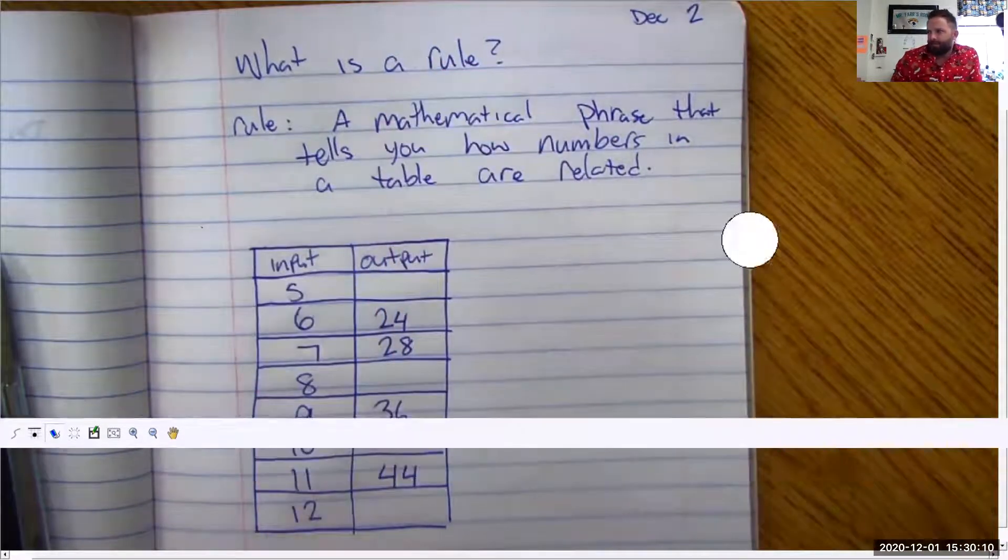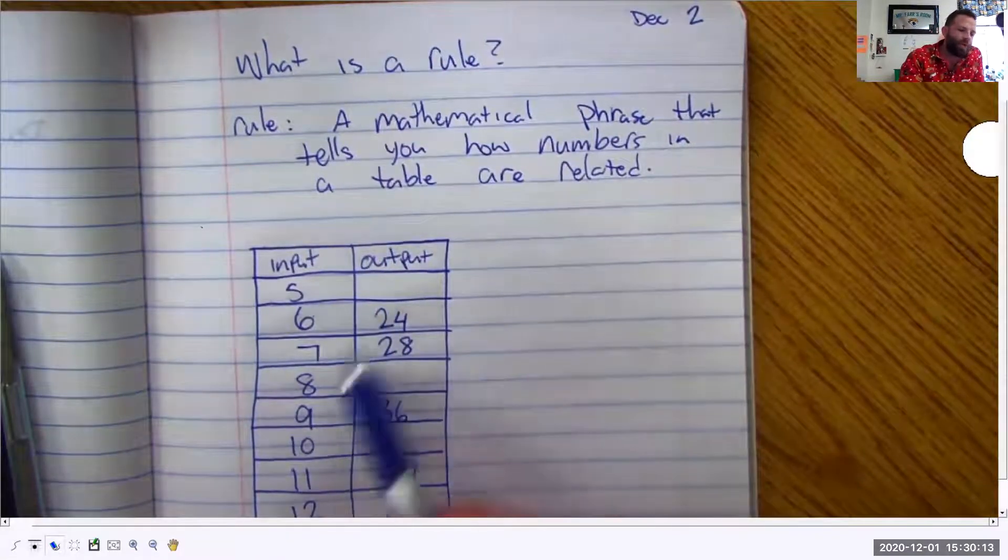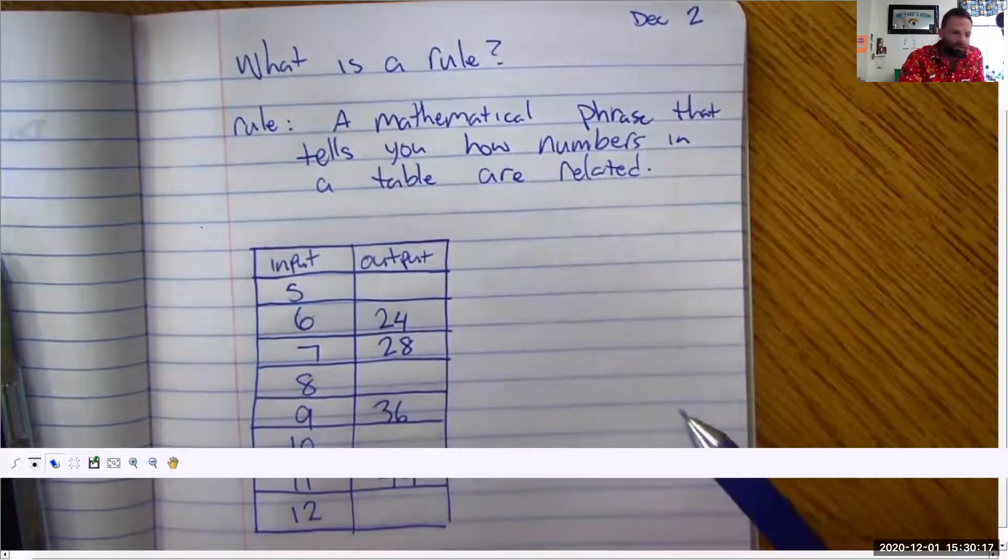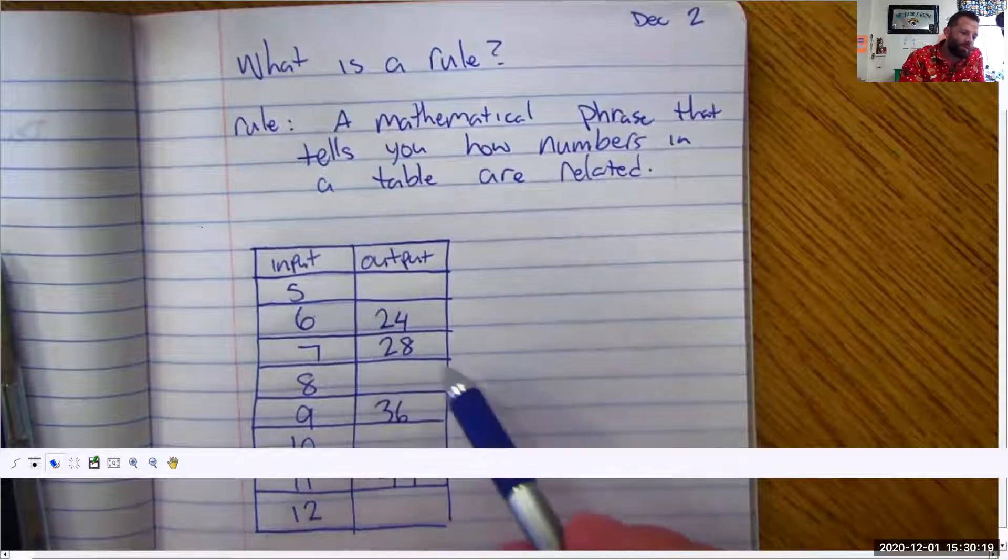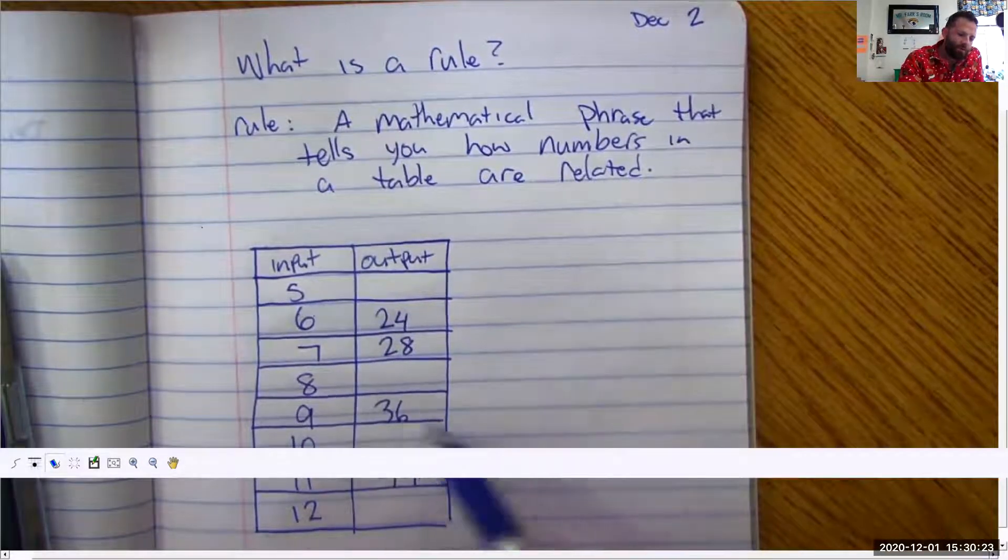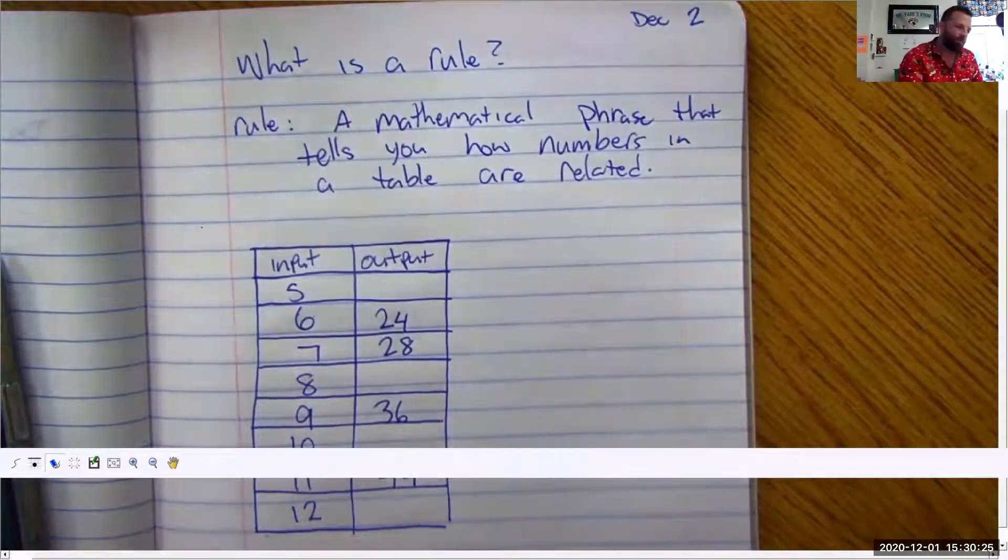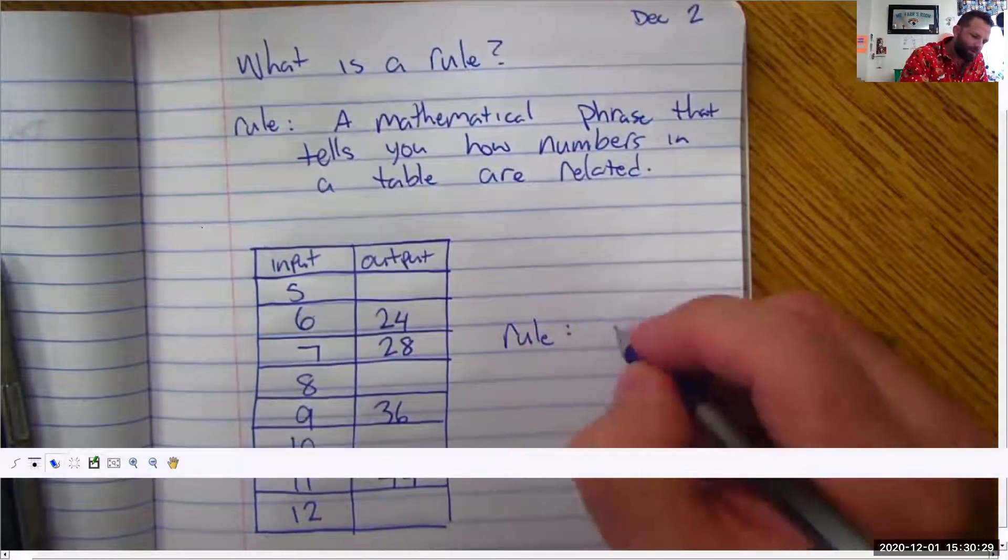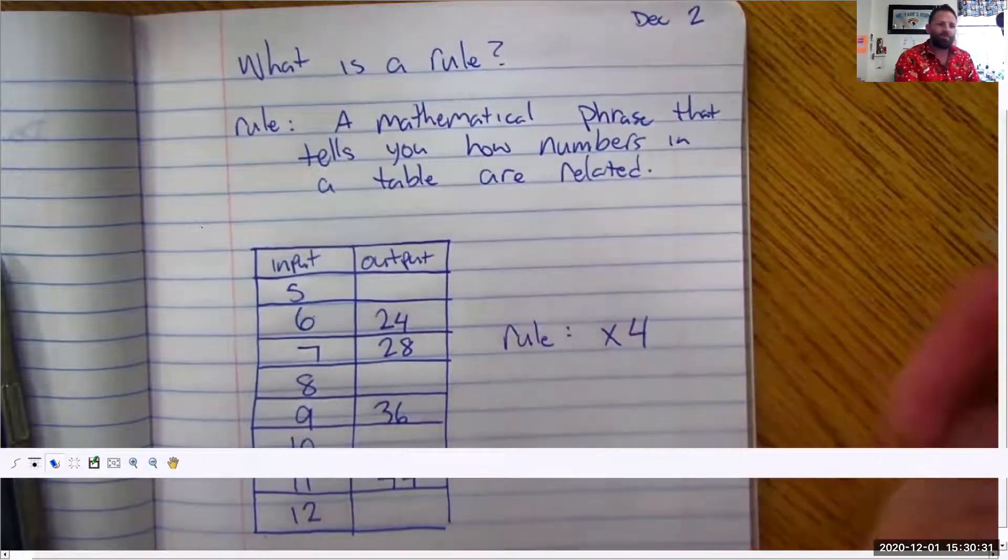So if I say that the rule is multiplying by four I need to check it with the ones that I have. Well six times four equals twenty-four. That works. Seven times four is twenty-eight. Okay. Nine times four is thirty-six. You know what? I think I figured out what the rule is.